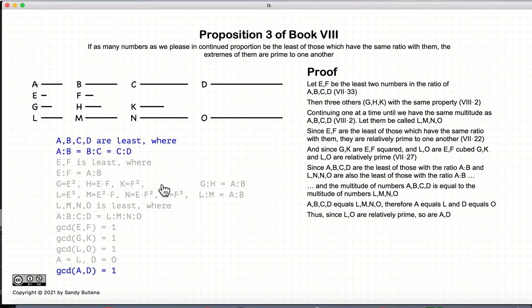So thus we have shown that if you have a series of numbers where they are the least for that particular ratio of A to B, then the extremes of your series, in this case A and D, will be relatively prime.